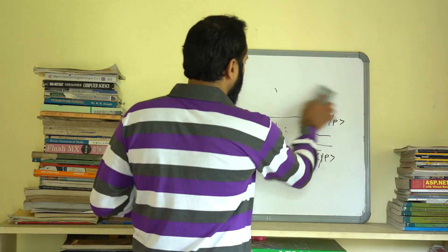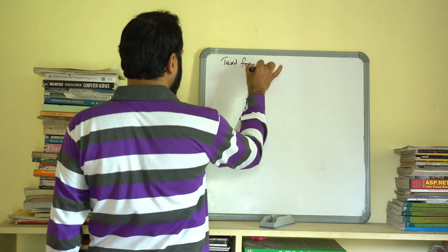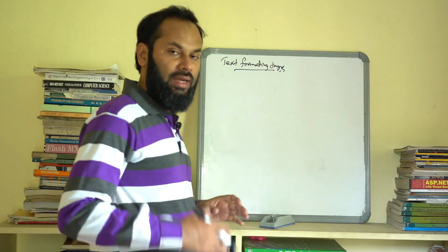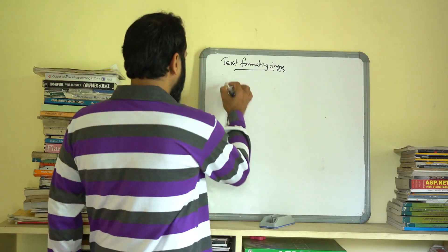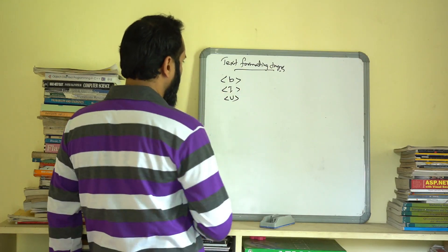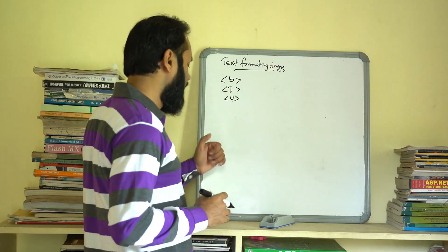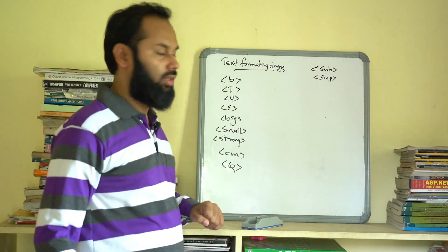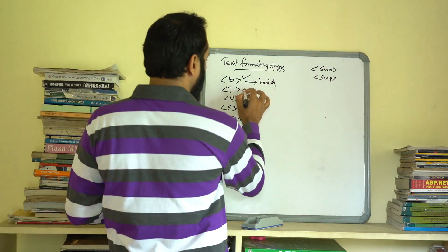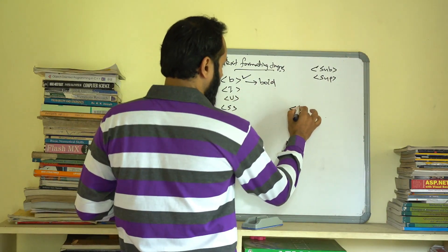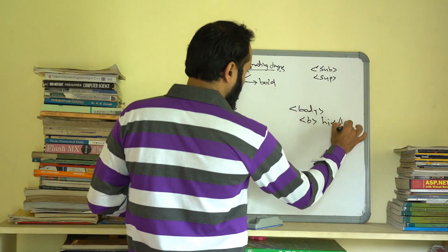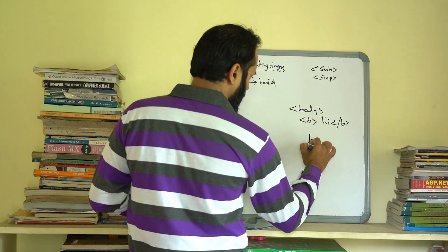The next tags are text formatting tags. There are many text formatting tags. The first one is B for bold, I for italic, and U for underline. The B tag makes your text bold. If you want to use bold, you open the B tag and close it. Then there is the I tag for italic.